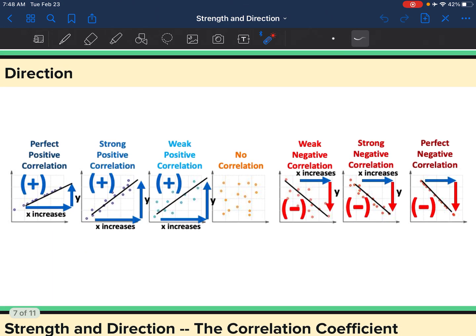So direction, we kind of talked about it with strength, about it being positive or negative. And direction just tells us, is the graph increasing? So X increases and Y increases. Or is it decreasing? As X increases, Y decreases. So we have positive and we have negative. Is the line going up? Is the line going down?